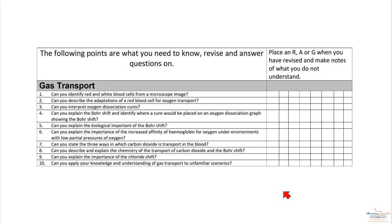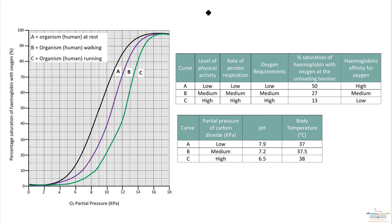Here's the graph that we're going to be using for this video. In terms of a definition, the Bohr shift is described as the lowering of hemoglobin's affinity for oxygen in the presence of carbon dioxide.